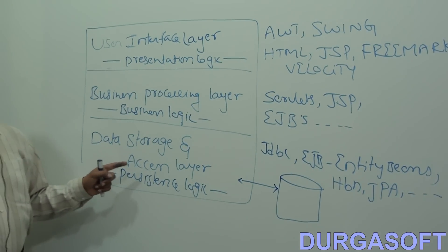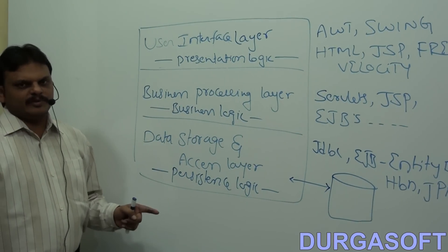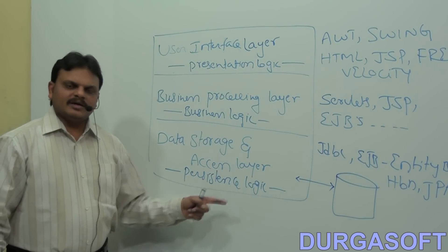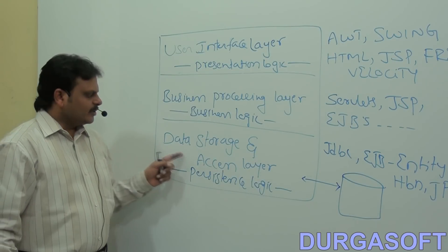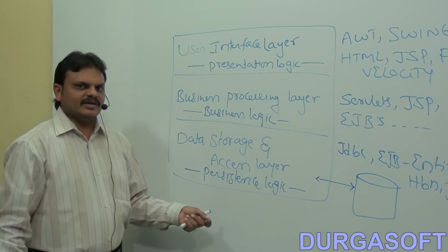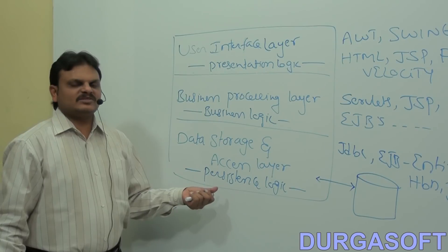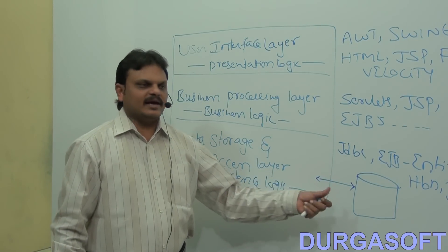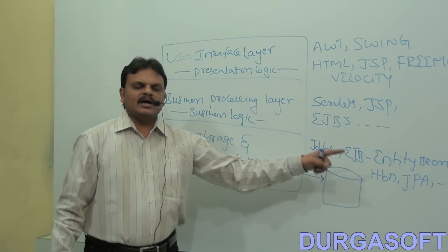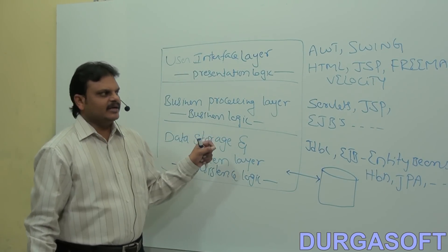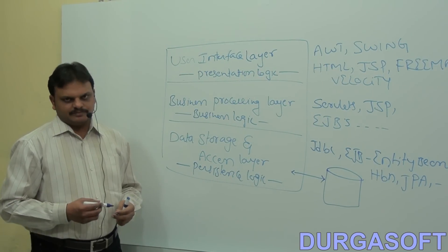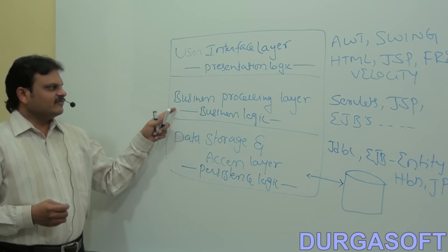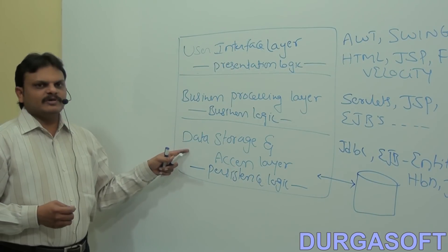To summarize, to prepare any enterprise application, we need to provide three layers: the user interface layer, the business processing layer, and the data storage and access layer. The user interface layer improves look and feel, accepts data from users, sends it to the server, and performs client-side validations. Its logic is called presentation logic, using technologies like AWT, Swing, HTML, JSP, FreeMarker, and Velocity.